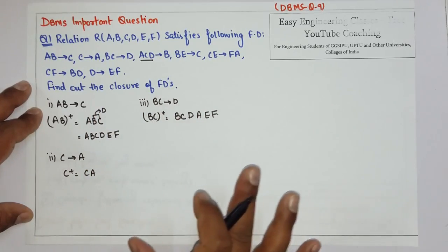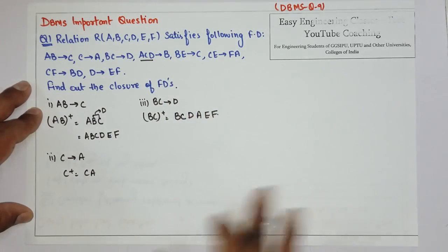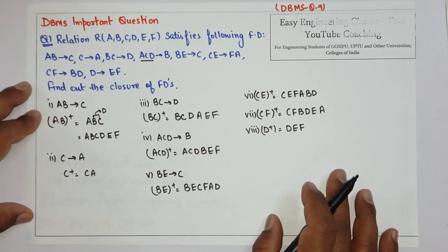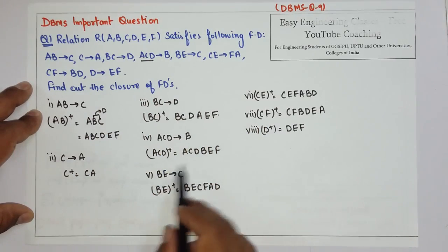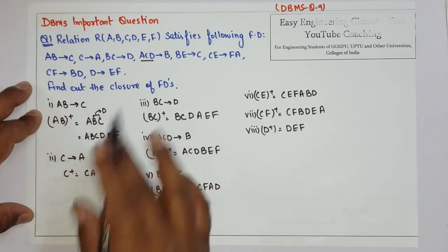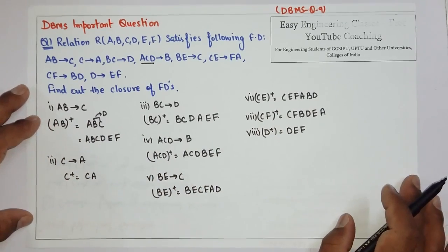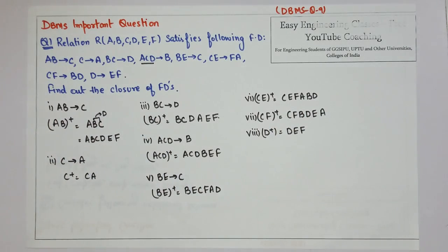Similarly you have to find for the other attributes. This is the complete solution for the question. You can check by solving by yourself that the answers are correct or not. Thank you for watching the video. Please subscribe to the YouTube channel for more questions on database management systems and other computer science subjects. Thank you.